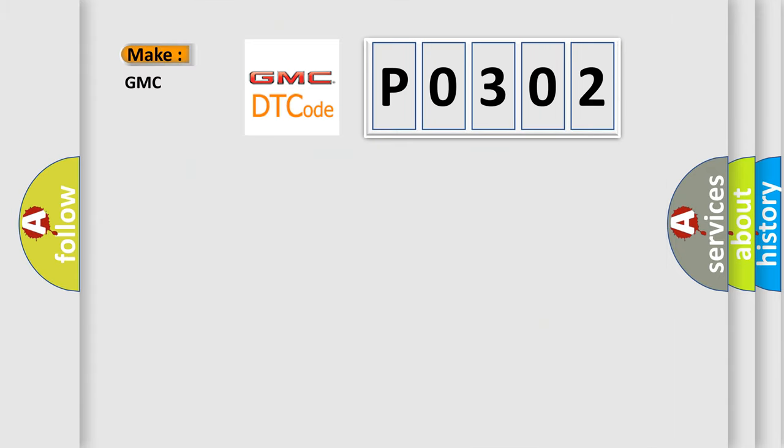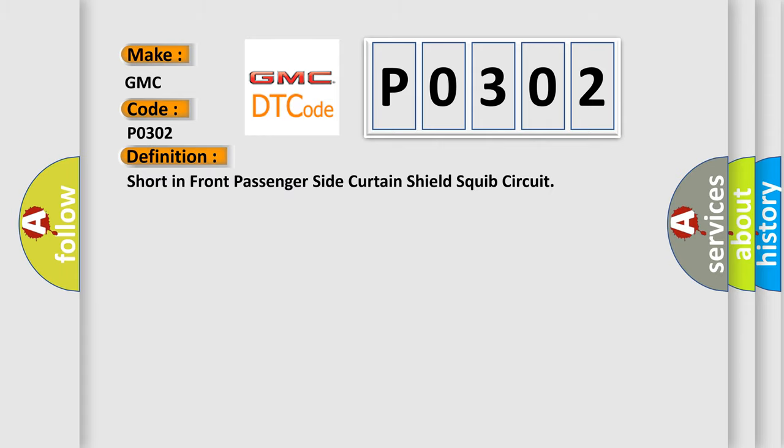So, what does the diagnostic trouble code P0302 interpret specifically for GMC car manufacturers? The basic definition is: short in front passenger side curtain shield squid circuit.